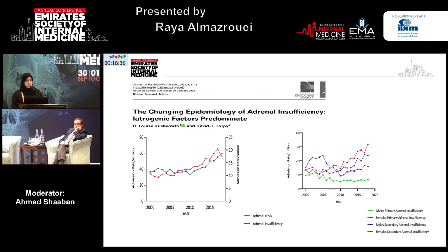Why are we talking about this important topic? Because population epidemiological studies have shown an increase in the incidence of adrenal insufficiency. This is mainly due to the increase of secondary and tertiary adrenal insufficiency, which is attributed to the increased use of exogenous steroids as well as opioids.